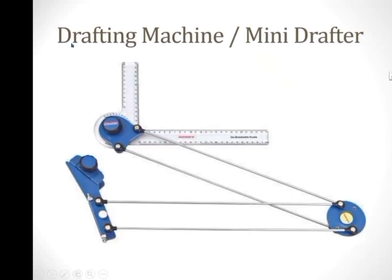This is a drafting machine, also known as a mini drafter. It is used to draw vertical lines, horizontal lines, parallel lines, and perpendicular lines. We can also draw inclined lines by adjusting the knob and setting the required angle.